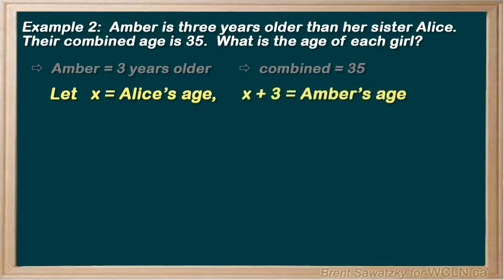Now, could we have made x equals Amber's age, the older sister, and then Alice would be x minus 3, or 3 years younger? You bet. Either way would work perfect. Choose the approach that makes most sense to you, and just make sure you document it so you're clear in the end. We're going to go ahead with our plan here.